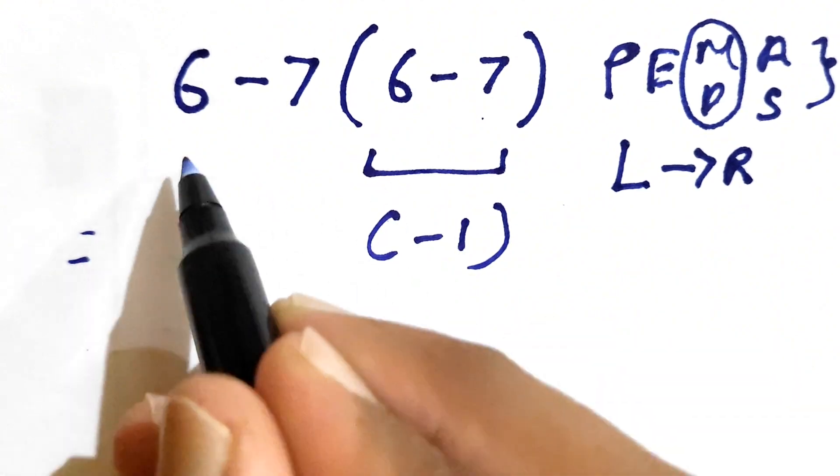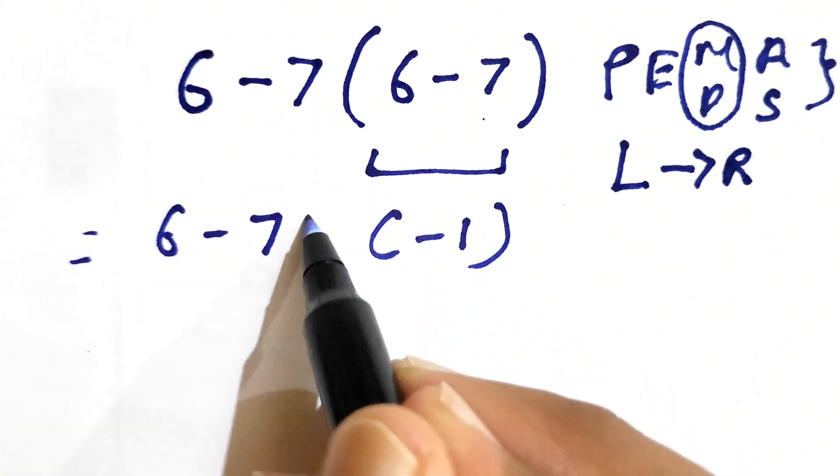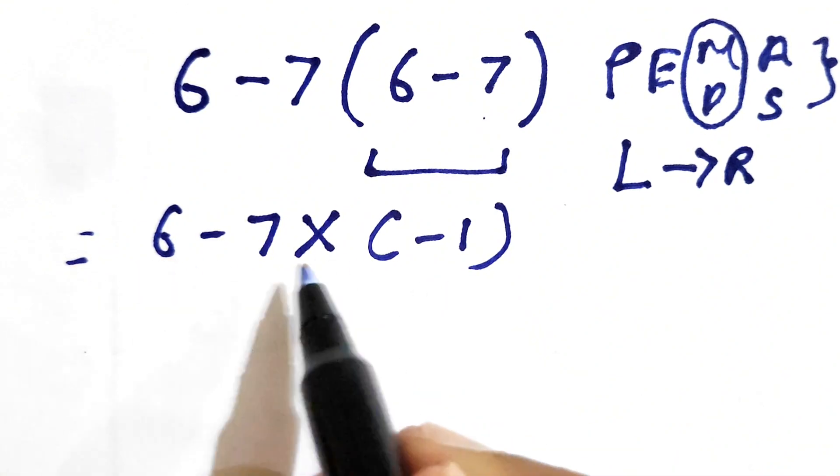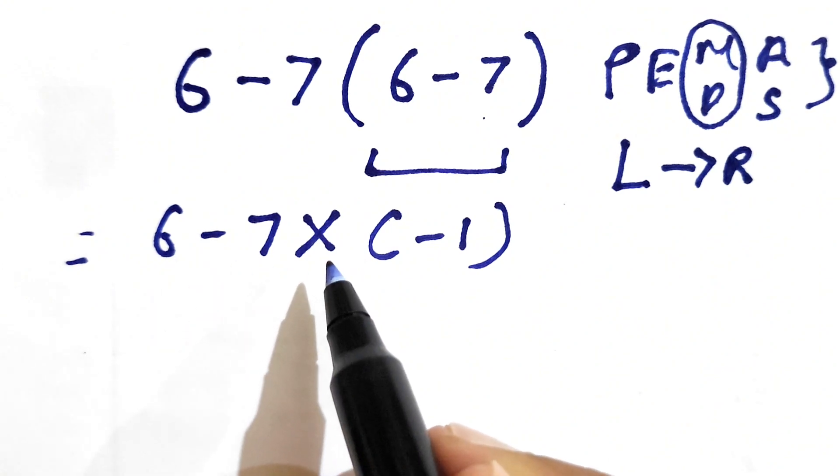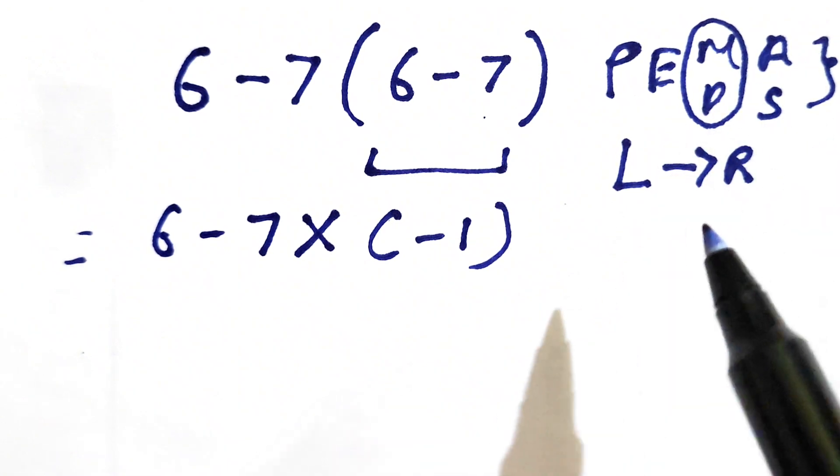So we will write 6 minus 7 times negative 1. Now as we can see in this case there is subtraction and multiplication. First we need to solve the multiplication because the priority of multiplication is greater.